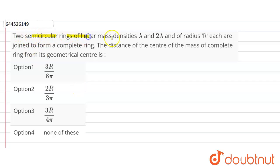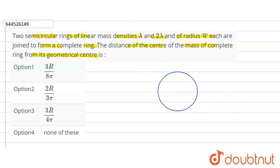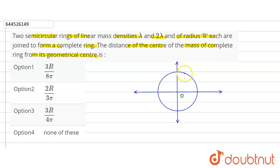Hello friends. The question given here: two semi-circular rings of linear mass density lambda and two lambda, and radius R each, are joined to form a complete ring. Find the distance of the center of mass of the complete ring from the geometrical center. So here is our complete circle, and let's set up coordinates — this is the y-axis.